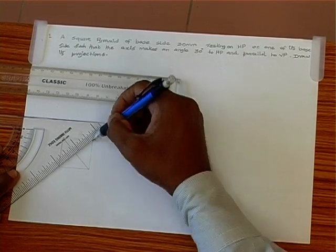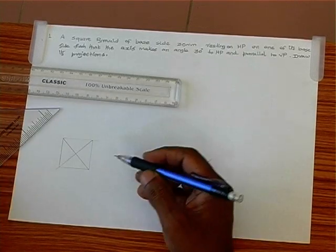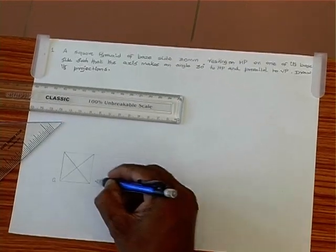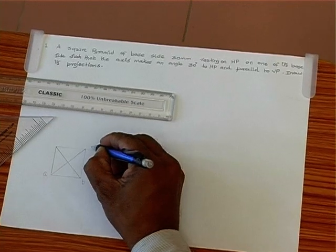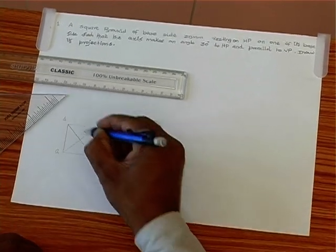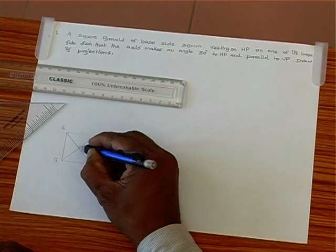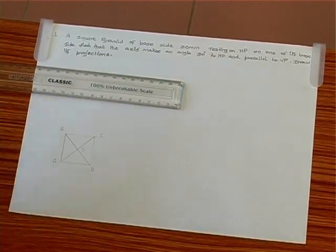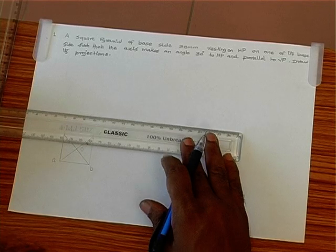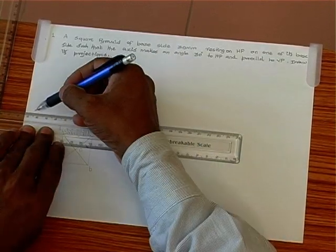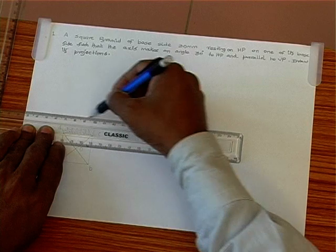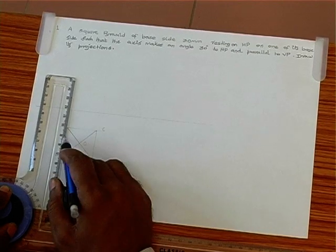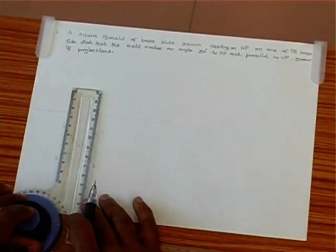For this corner also. So we name the square: it's A, B, C, D, and O is the vertex center. So now we project this and we get the front view. For us, the reference line is XY. So we project this base, which is projected on XY line.